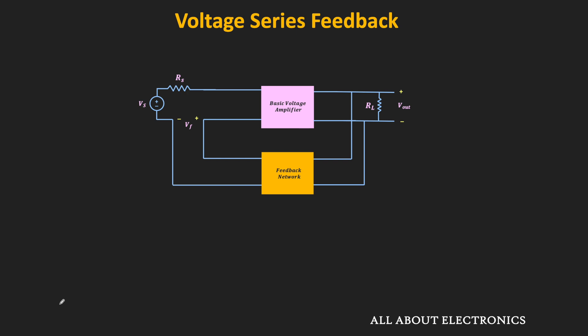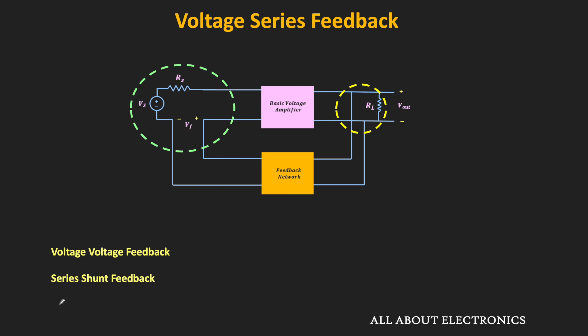In the voltage series feedback, there is voltage sampling and series mixing. On the output side, the voltage signal is sampled, and on the input side, through series mixing, this feedback voltage is subtracted from the source signal. This feedback topology is also known as the voltage-voltage feedback, and based on the connection, it is also known as the series-shunt feedback topology, because on the input side we have the series connection, while on the output side we have the shunt connection.